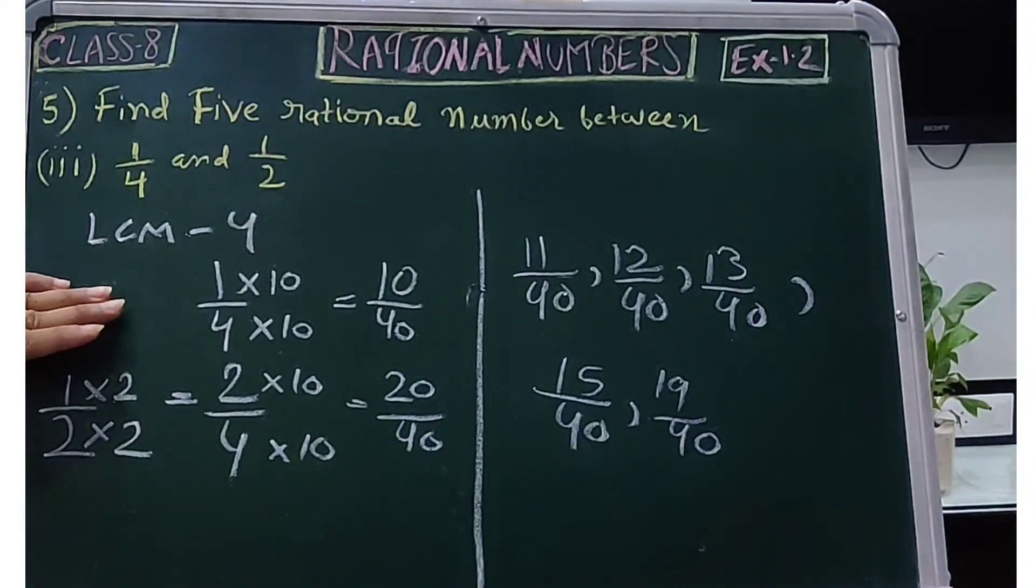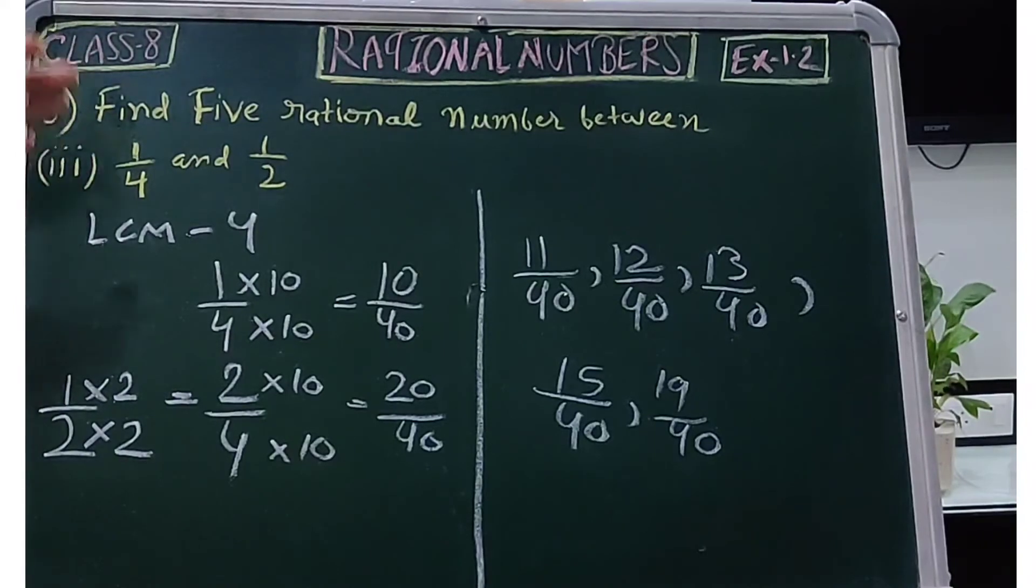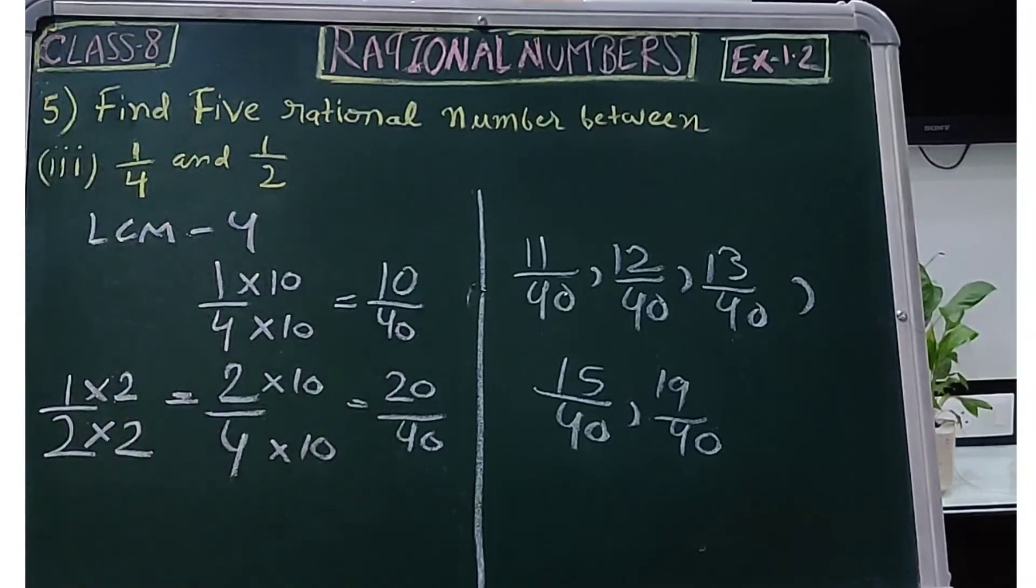This is the simplest way to find 5 rational numbers between these two numbers.